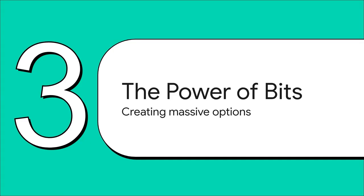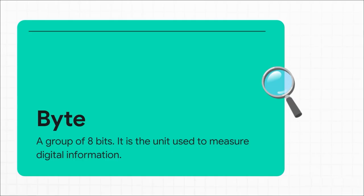Alright, so one bit is a switch, and a few bits can make a number. But the real magic — the part that's truly mind-blowing — is what happens when we start stringing lots of them together. This is where those tiny little bits unlock absolutely massive possibilities. Here's the word you've definitely heard before: a byte. A byte is simply a group of 8 bits — that's all it is. And this is the basic unit for pretty much all digital information. When you hear about kilobytes, megabytes, gigabytes, you're really just talking about thousands, or millions, or billions of these little 8-bit groups.